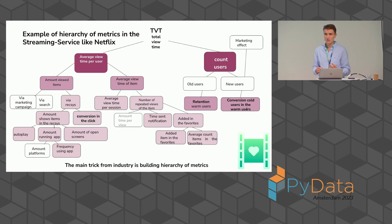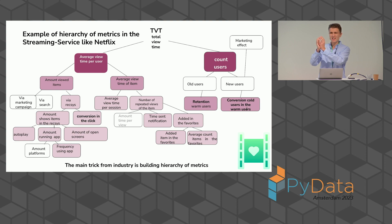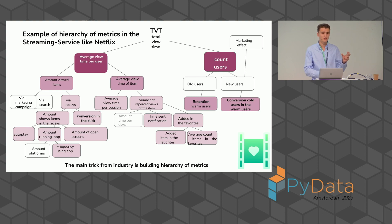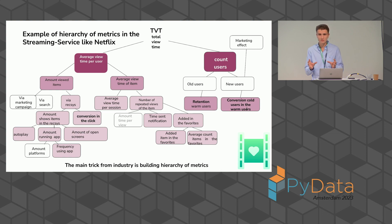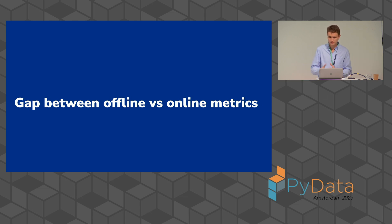The second key is to build a hierarchy of metrics — this is the main trick from industry. If we build a hierarchy of metrics, it can be very useful. There should be one primary business metric, and we need to decompose this into submetrics and use each submetric for a specific user segment. For example, a hierarchy of metrics in a streaming service like Netflix helps us understand how our machine learning models affect the overall system.